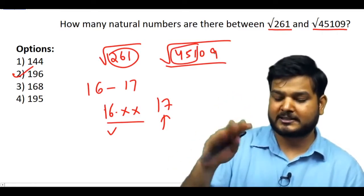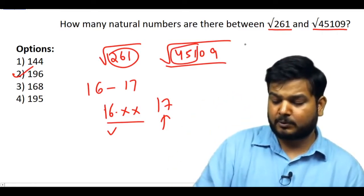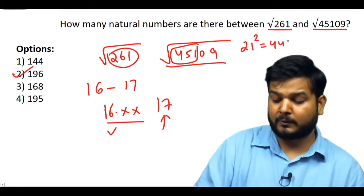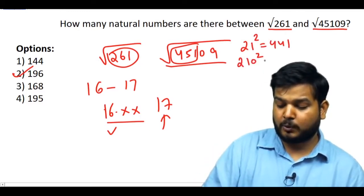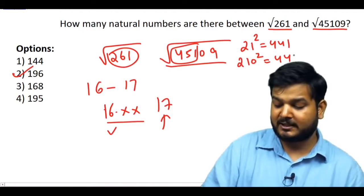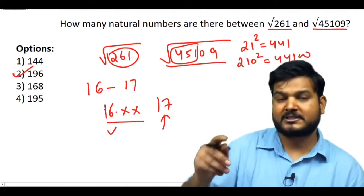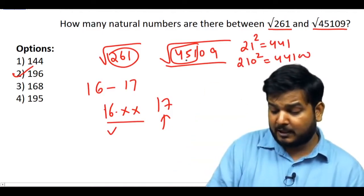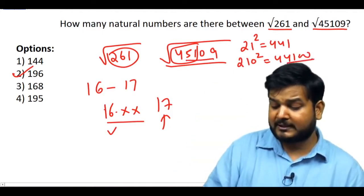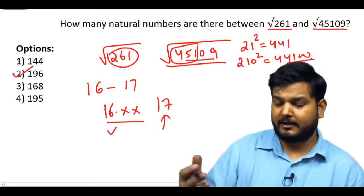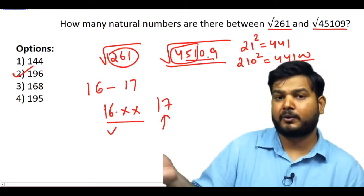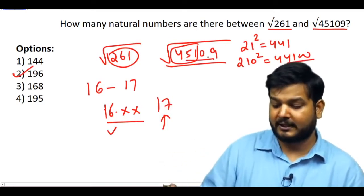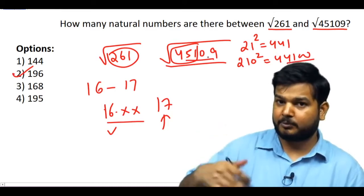Now for √45109: the first three digits are around 400. I know 21² = 441, so 210² = 44100. This number is more than 44100 — specifically 45109, so √45109 is more than 210.